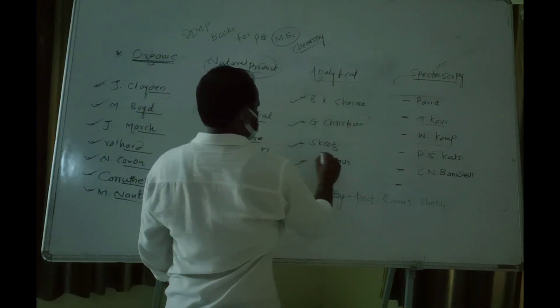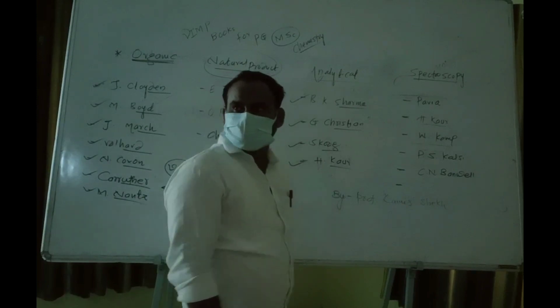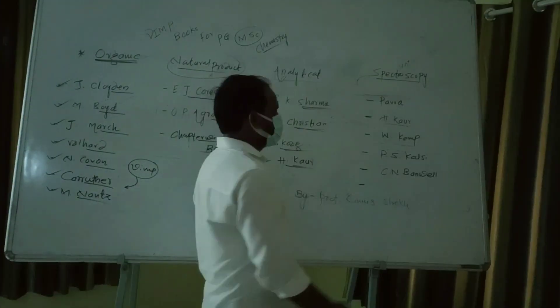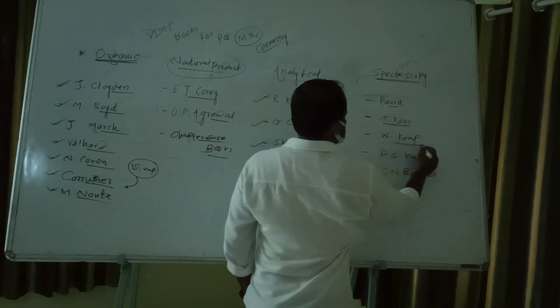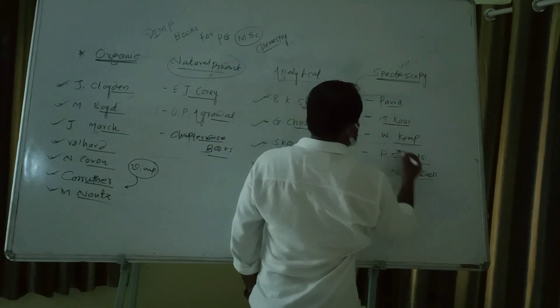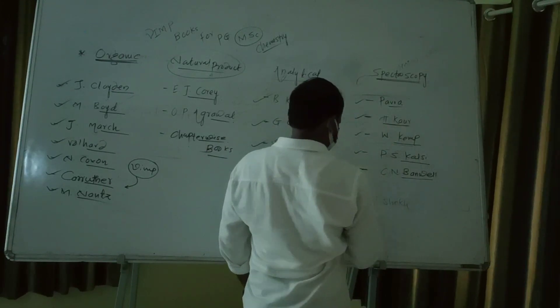For analytical chemistry, we have BK Sharma, Gary Christian, Scoog, and H Core. And for spectroscopy, we have the important books like Pavia, H Core, William Kemp, P.S. Calce, and Colin Bunwell. These are some important books for spectroscopy.